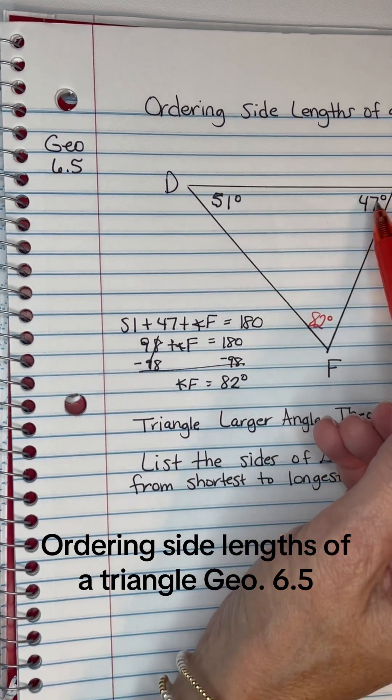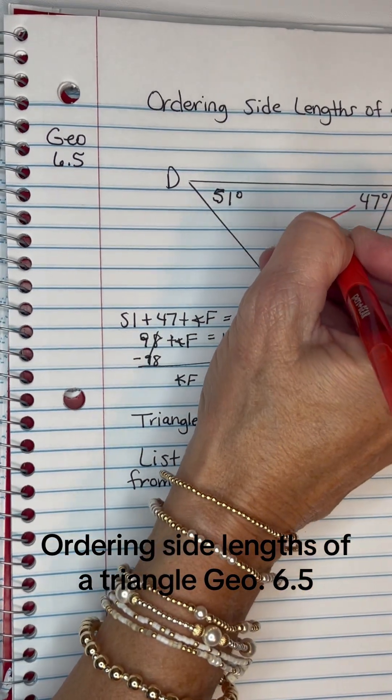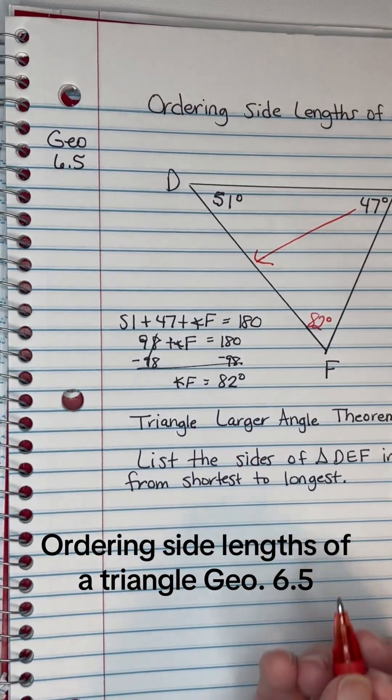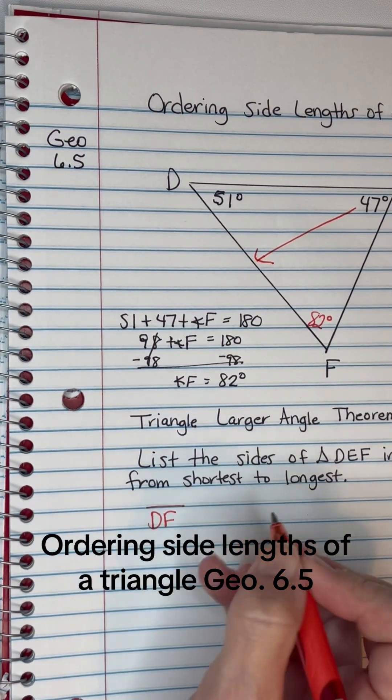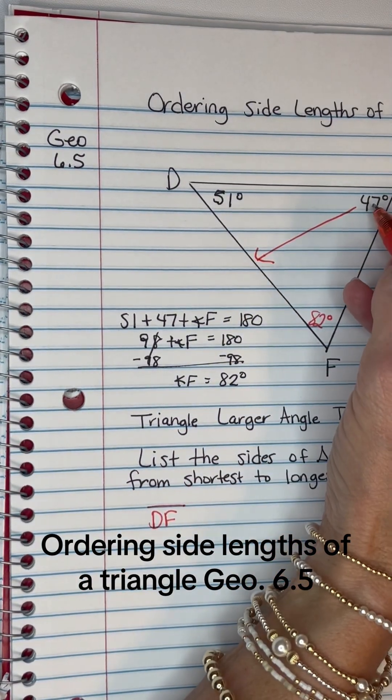The smallest angle up here is 47, so it is opposite this leg, and this leg will be DF. DF will be the shortest leg because it's opposite the smallest angle.